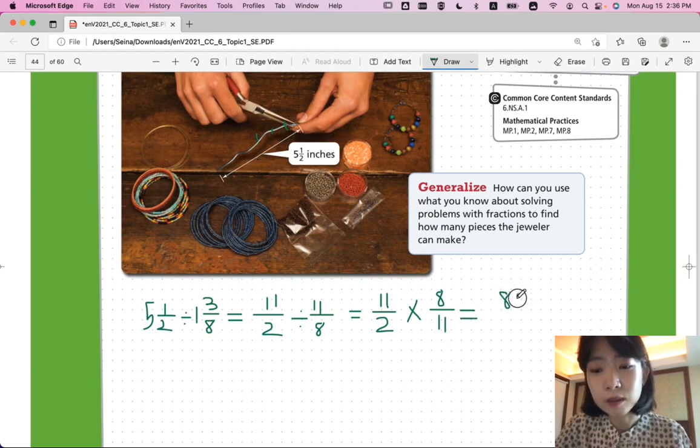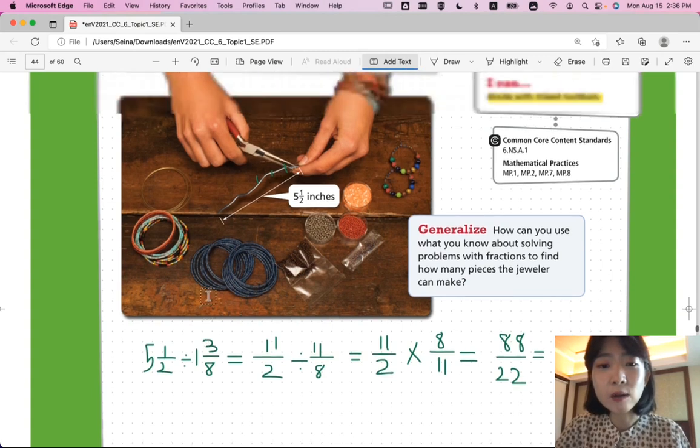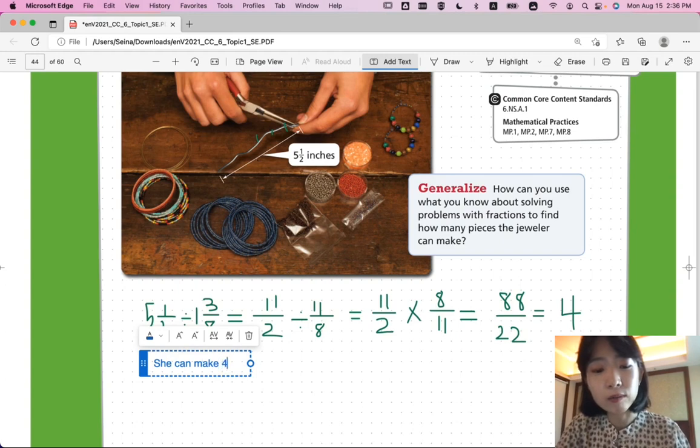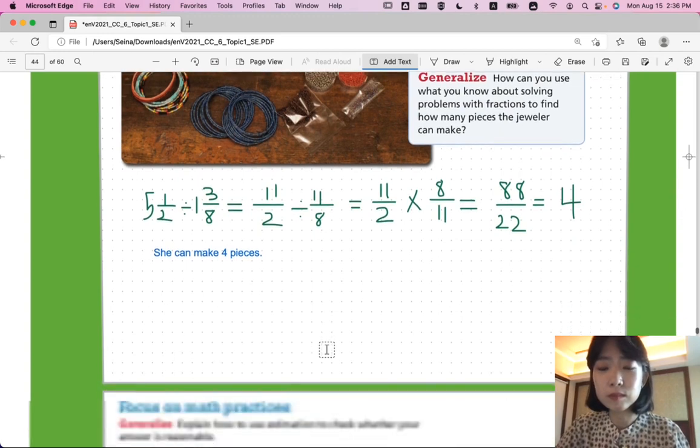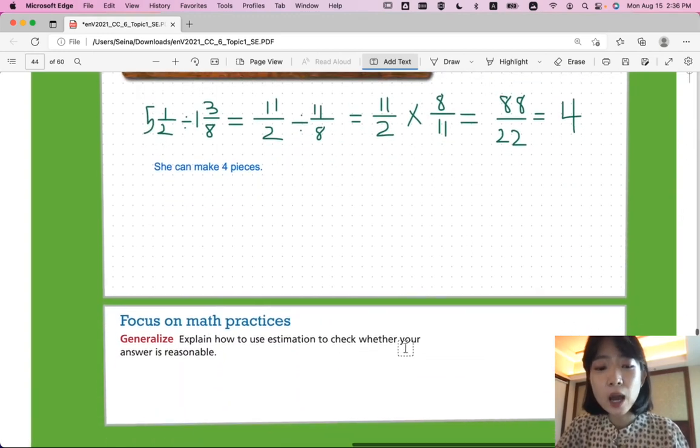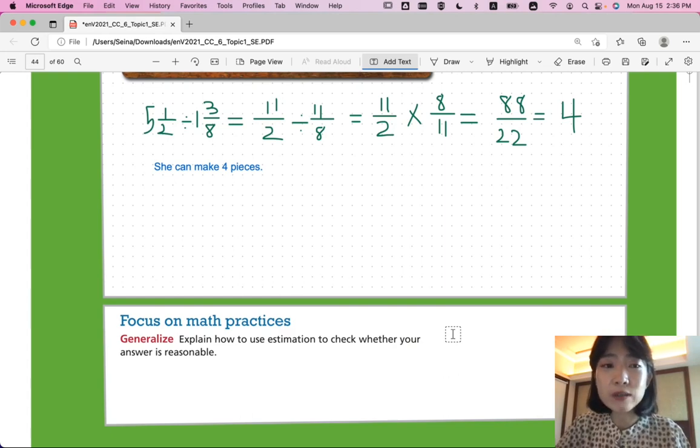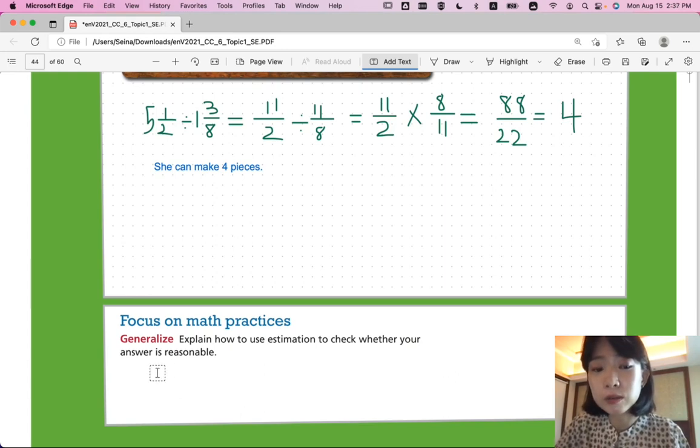So, 88 over 22 is your answer, which will simplify into exactly 4 pieces. So, how many pieces? She can make 4 pieces. Focus on math practices. Explain how to use estimation to check whether your answer is reasonable. Now, estimation is not the exact answer, but you can use estimation to quickly check if your answer is close.